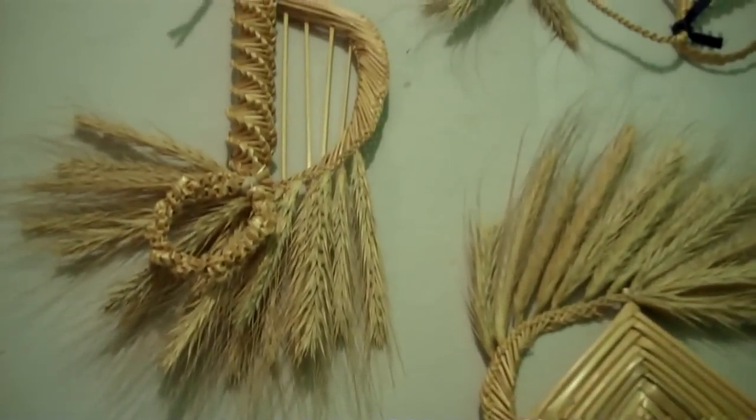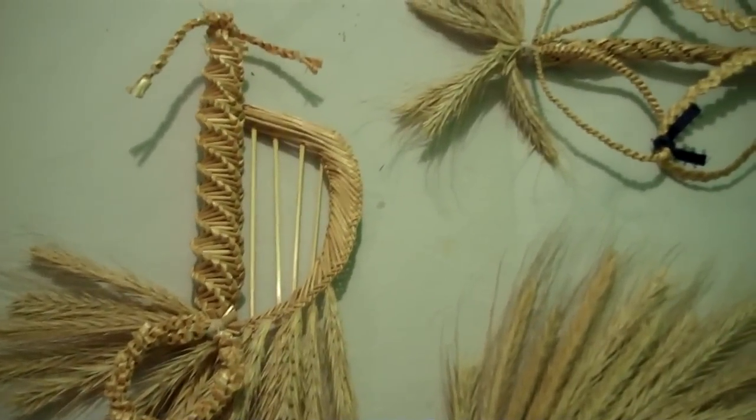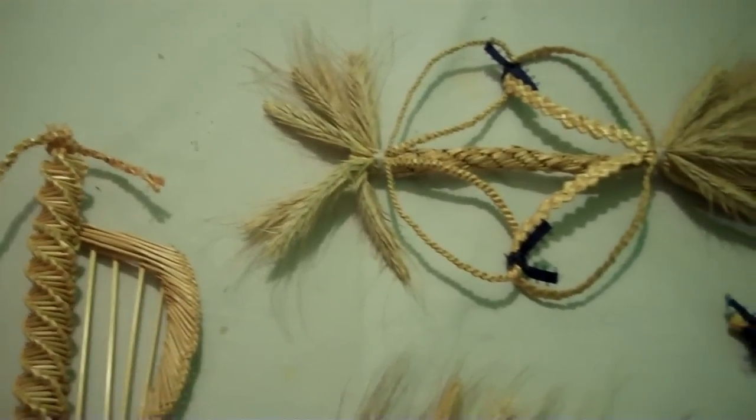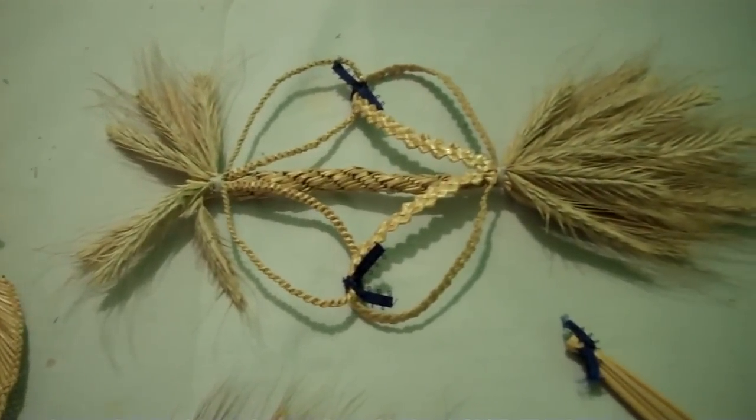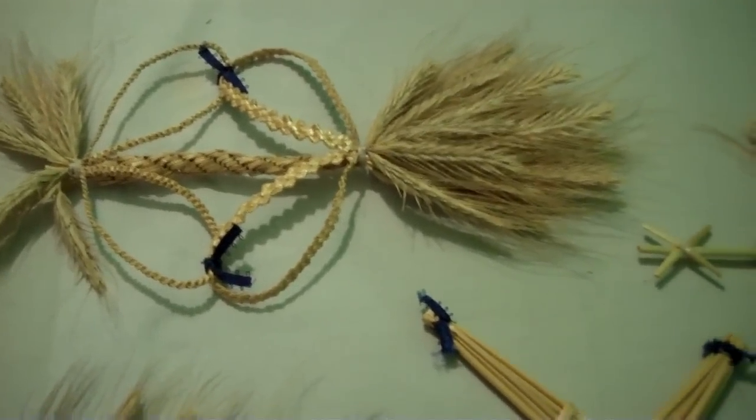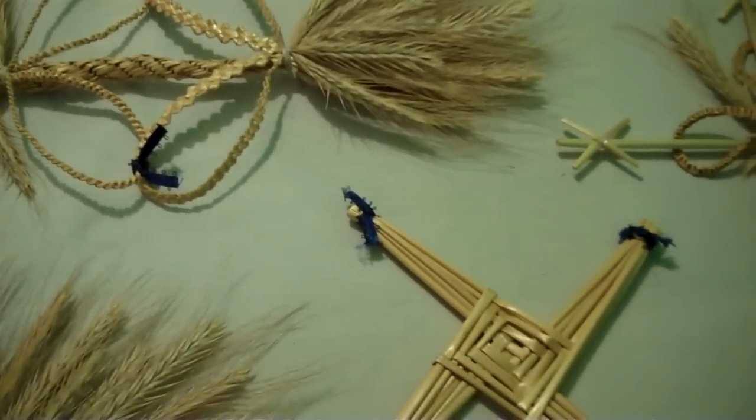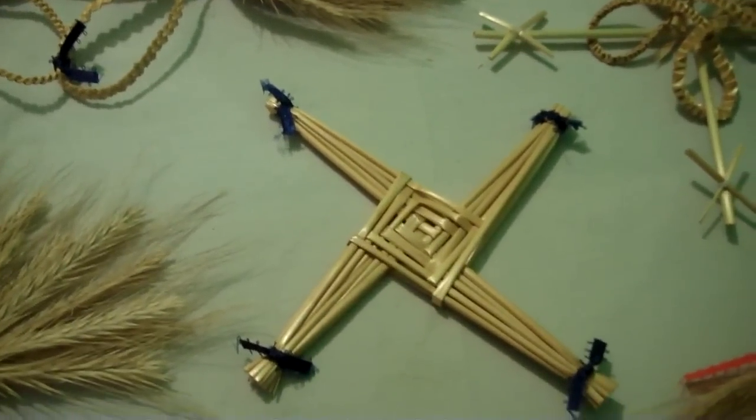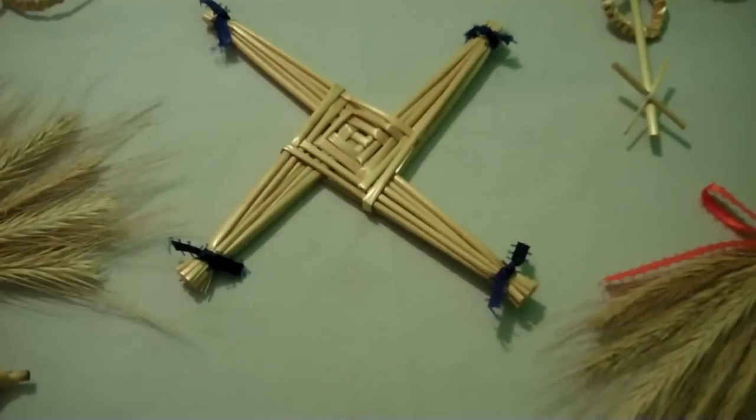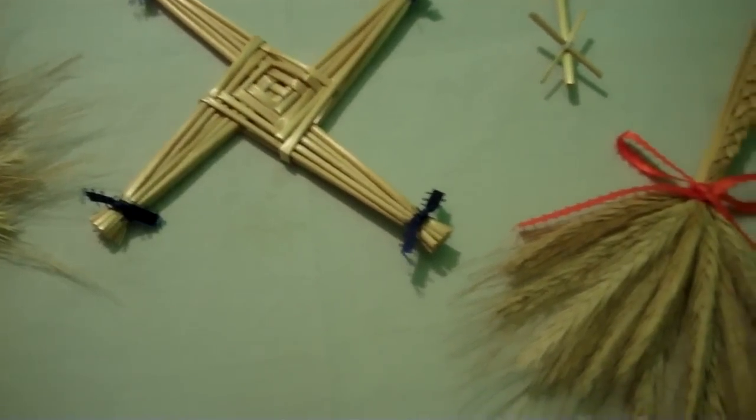Now wheat weavings, or corn dollies as they're sometimes called, date back thousands of years to when farmers would be worried about the harvest. So they would take the last few strands of a good harvest and weave them into a design in hopes of catching the spirit of the wheat. Come spring, the farmer would take that wheat weaving and plant it and have it be the first grain planted in hopes of ensuring a bountiful harvest.